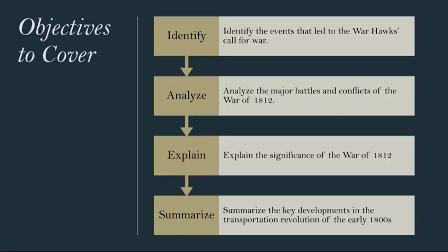We will begin talking about the events leading up to the War of 1812, often called the Second War of Independence. One of the primary grievances was British impressment of American sailors, where British naval forces forcibly conscripted American sailors into service. This practice deeply angered Americans and created tensions. Additionally, Britain's interference with American trade, especially through the orders in council and the blockade of European ports, further strained relations.